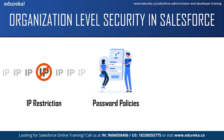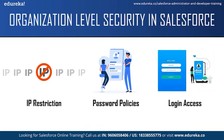Next, password policies allow you to specify how long before a user's password expires and the type of password required — for example, at least 10 to 12 characters long, containing at least one symbol, and both uppercase and lowercase letters with numbers. A strong password makes it harder for hackers to guess. Login access lets you specify the hours during which users can log in, such as restricting weekend logins or limiting night shift employees to their shift hours.